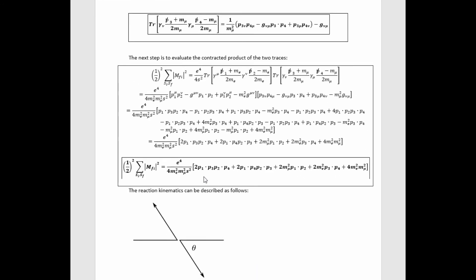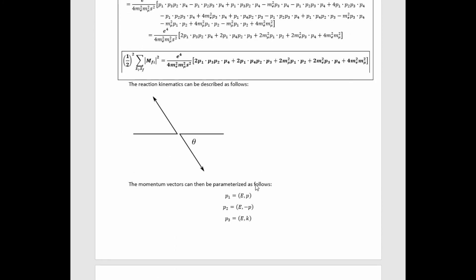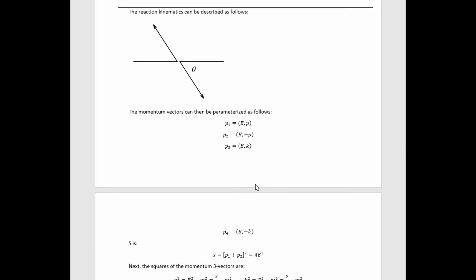So now we've got in terms of dot products of momentum vectors a value for this average squared amplitude. So now we can remember that we're in the center of mass frame and pick a convenient parameterization for the momentum vectors based on that fact.